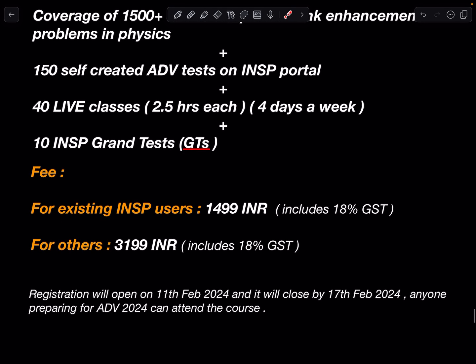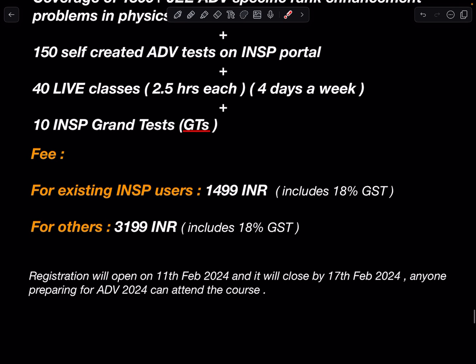Regarding fees: for existing INSP users who recently purchased the 1699 course, this will be available as an upgrade on the INSP website for 1499 INR. For others not yet associated with us, the course will be 3199 INR. Both prices include 18% GST. Registration opens on 11th February 2024 and closes by 17th February.